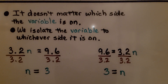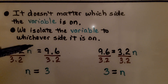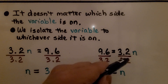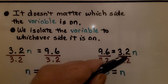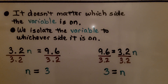It doesn't matter which side the variable is on — we isolate the variable to whichever side it's on. If we have three and two-tenths times n is equal to nine and six-tenths, we divide both sides by the coefficient three and two-tenths and get n is equal to three. If the variable is on the right side, we still divide both sides by the coefficient three and two-tenths and get three is equal to n. It doesn't matter which side the variable's on — we isolate it to whichever side it's at.